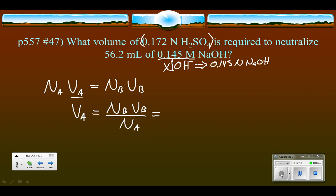And we can start plugging numbers in right here. We know the normality of the base. We just found it as 0.145 normal. And that's times the volume of the base. The volume of the base is 56.2 milliliters.